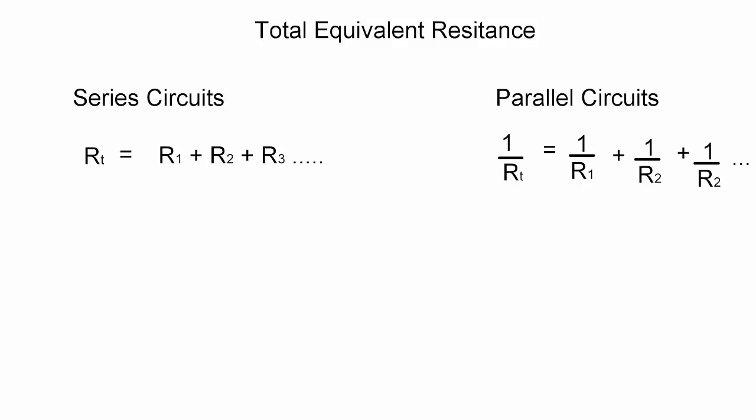In a series circuit, the total resistance is the sum of all the resistors. Whereas in a parallel circuit, the total resistance is the sum of all the resistors inversed.